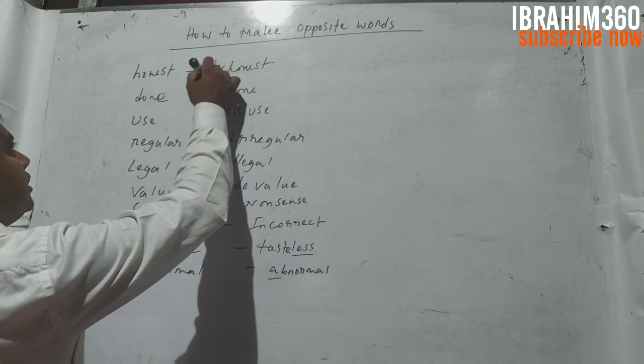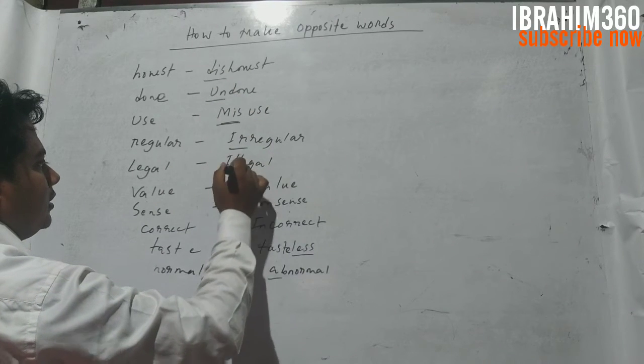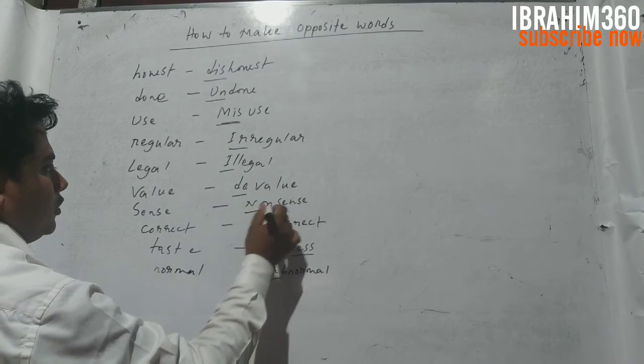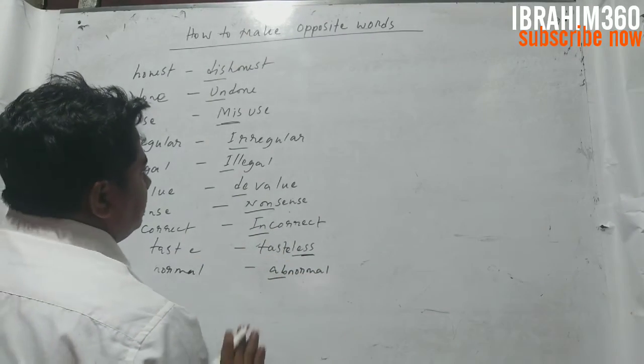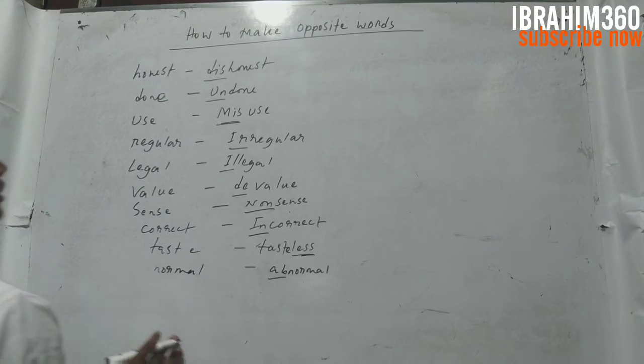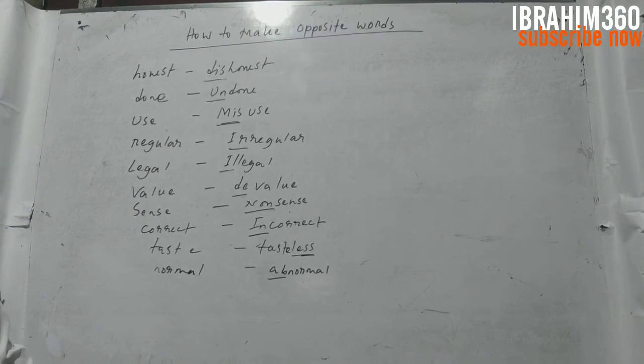Tamar ami boozhlam je is, an, mis, ir, il, di, non, in, less, ab. Ei shabda gulo diye amra automatically bipurit shabda opposite word gathan korte paree.